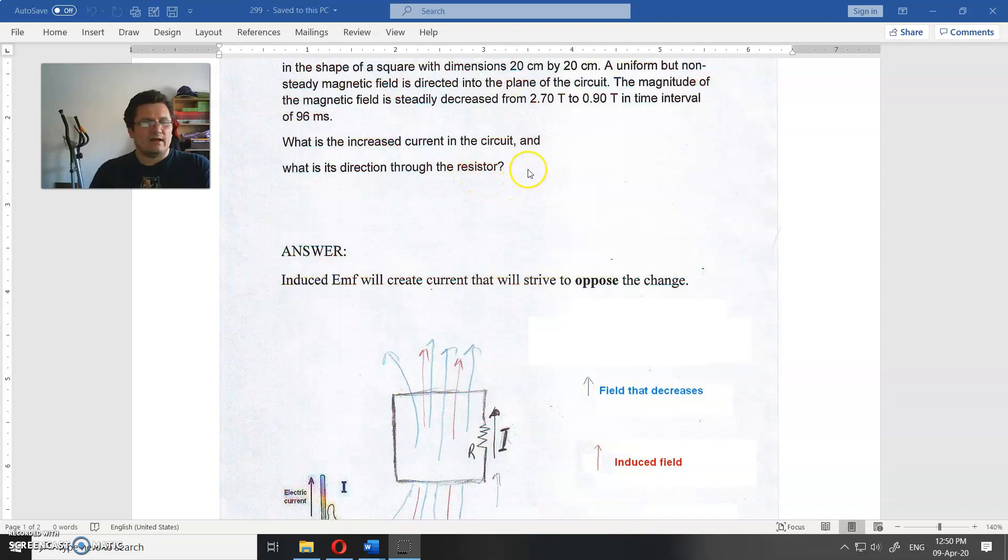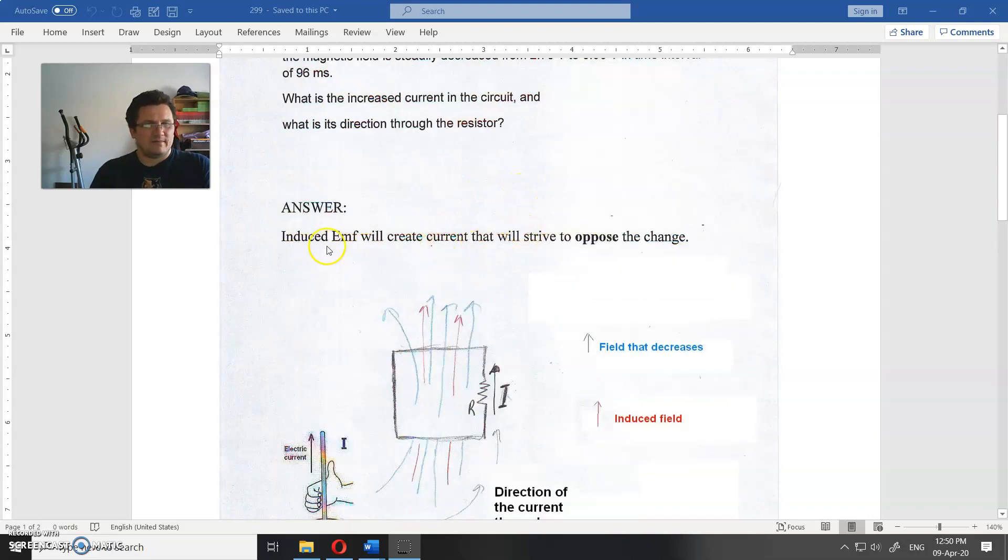When we induce currents, what will help? Induced electromagnetic force will create current that will strive to oppose the change. So we have upwards magnetic field, whatever current may be, that current will be created to oppose change in magnetic field. That is what induction does.